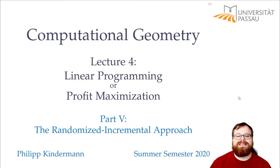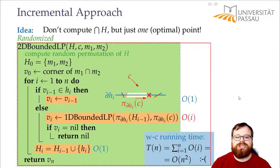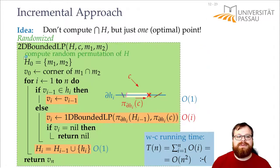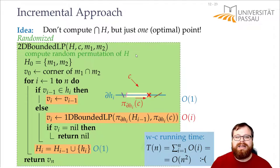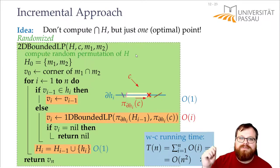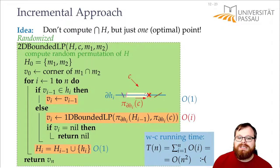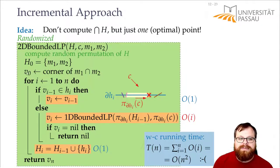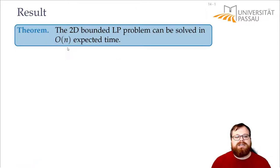In this part we want to analyze the running time of the randomized incremental approach, where we first compute a random permutation of our half planes and then incrementally add one half plane to the solution, only updating the optimum whenever it changes. While in the worst case this takes O(n²) time, the expected running time is much better — it is O(n).